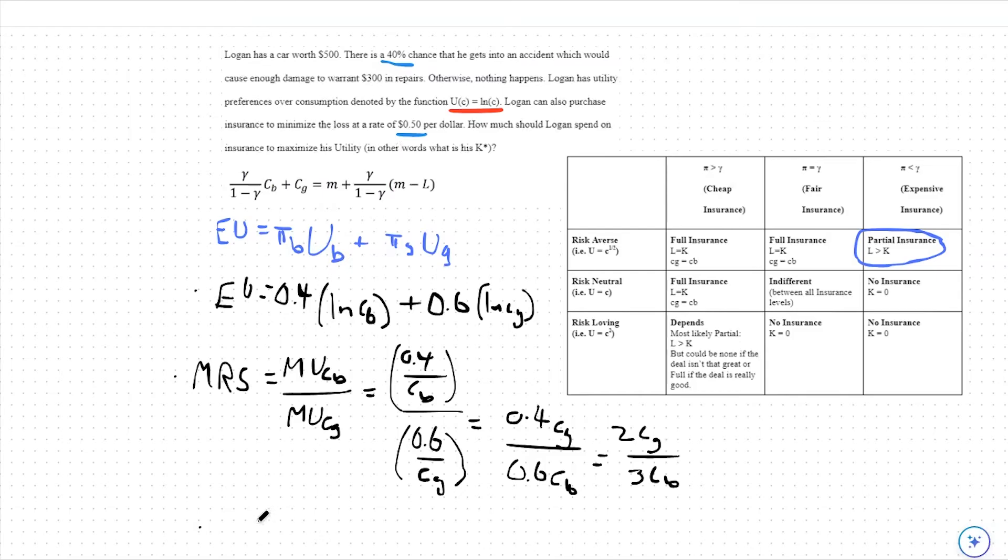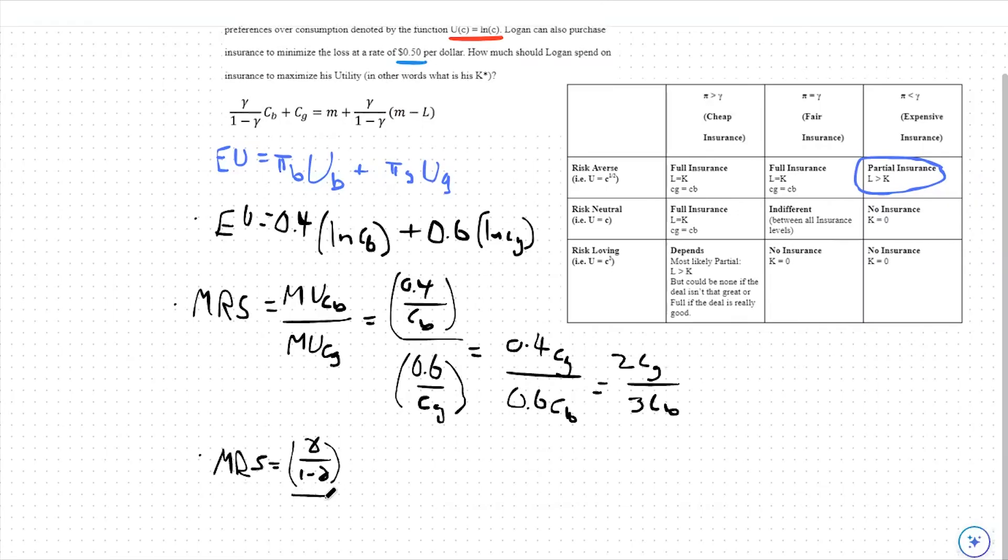This means we set our MRS equal to gamma over 1 minus gamma over 1, or just gamma over 1 minus gamma. So our MRS we found to be 2 CG over 3 CB. We set this equal to 0.5 over 1 minus 0.5, plugging in that $0.50 per dollar premium.